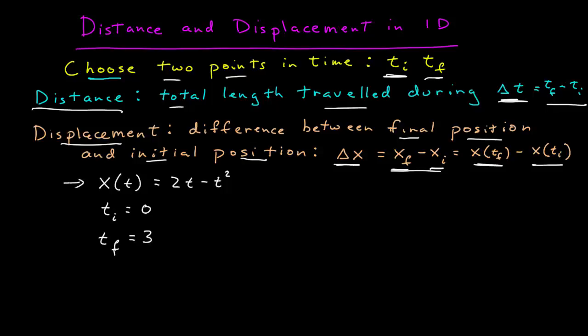Here I have a position function in time, x of t equals 2t minus t squared. Time is in seconds, x is in meters. I've chosen two specific points in time. My initial time I'll call zero, my final time I'll call three.